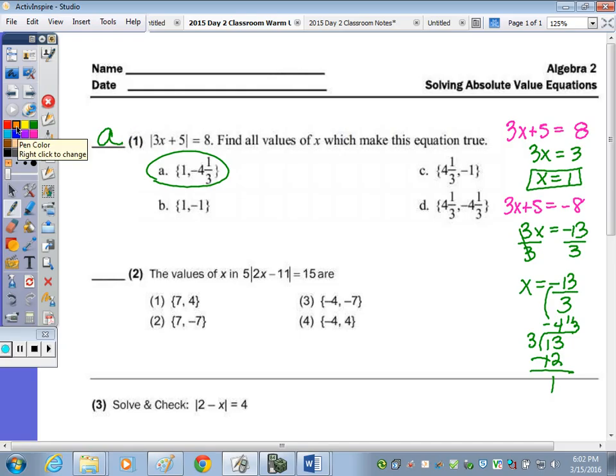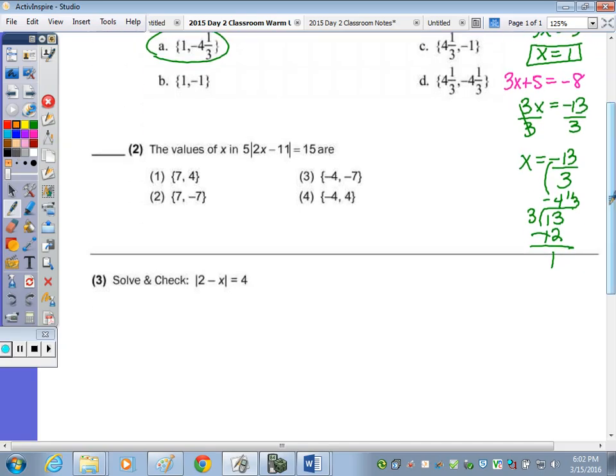In number 2, the values of x in that equation—before you can set it equal to 15 and negative 15, you have to isolate. So divide by the 5 and you get the absolute value of 2x minus 11 equals 3. When the absolute value expression is isolated, I put that cloud shape around it, so you know now you can set 2x minus 11 equal to 3 and 2x minus 11 equal to negative 3.